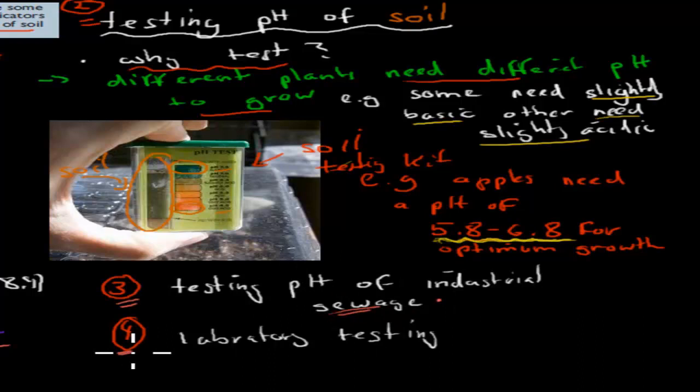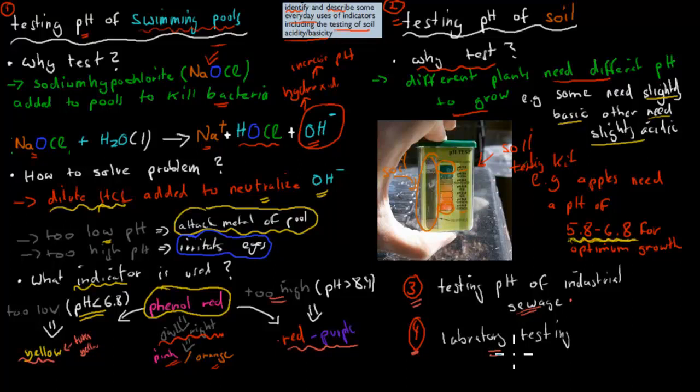Another place we often use is obviously in laboratories. So for example, you're going to do titration soon. And for titrations, you're going to have to use your pH indicators to figure out if something has changed from a base to an acid. And generally, we use indicators in our labs, both for school labs and for science labs quite a bit as well.